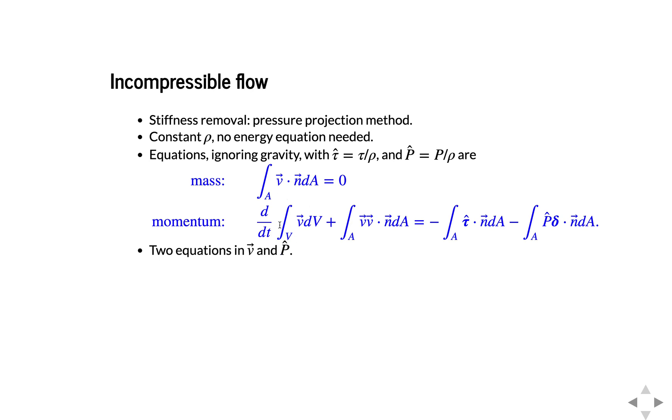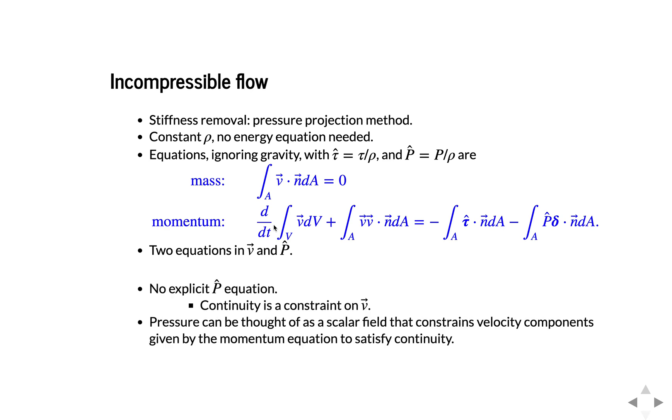And these are two equations now in velocity and pressure. So we have two equations and two unknowns effectively. The problem is that we don't have an explicit pressure equation. So the momentum can be thought of as an equation for the velocity. But the mass equation doesn't give us a pressure equation. The mass balance basically is a constraint on the velocity. The mass balance says that the velocity has to be divergence free, which is equivalent to saying volume has to be conserved.